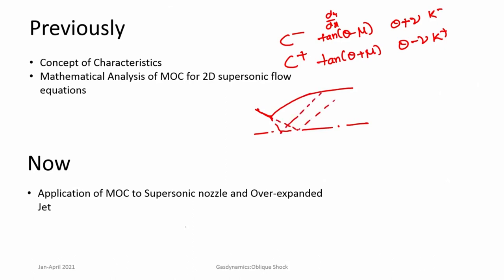If the nozzle wall is not properly controlled, these characteristics keep reflecting off the walls and at the end you get a non-uniform flow. In order to get a uniform flow, you have to design the wall such that it cancels the waves — these Mach waves — once they impinge on the wall. That can be done by making the wall angle equal to the flow angle at each Mach wave. That is the principle we are going to use to look at how to design such nozzles.